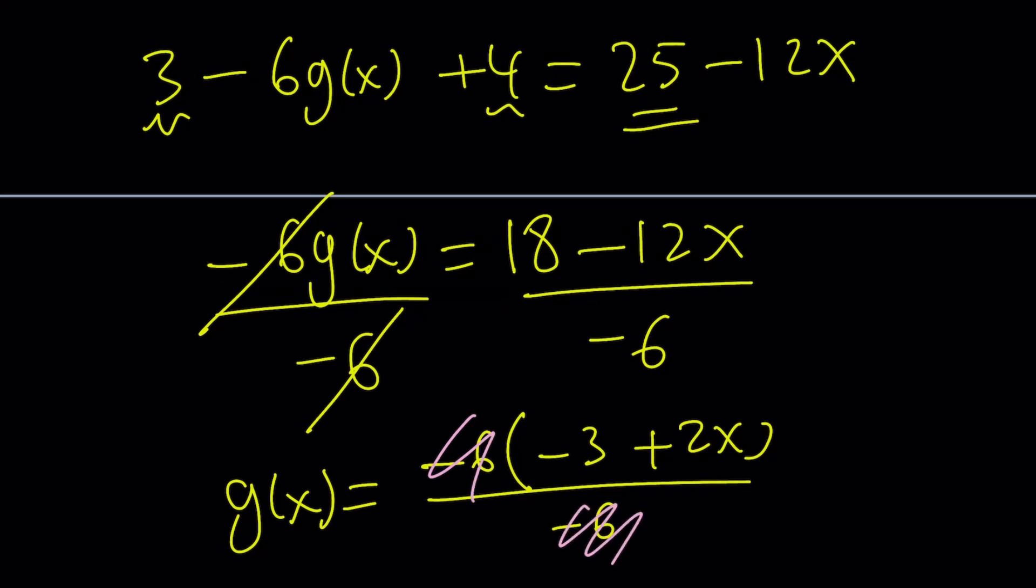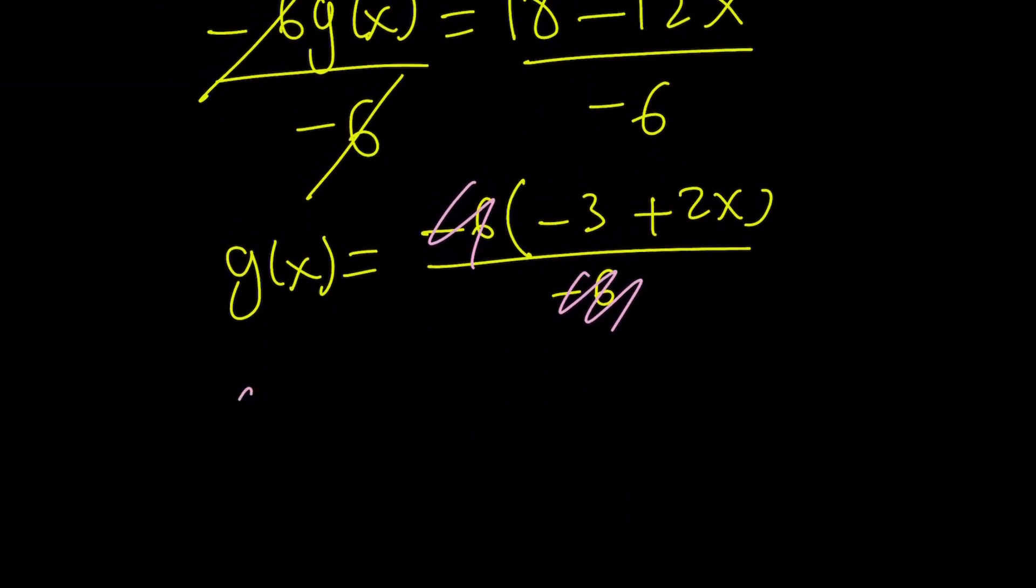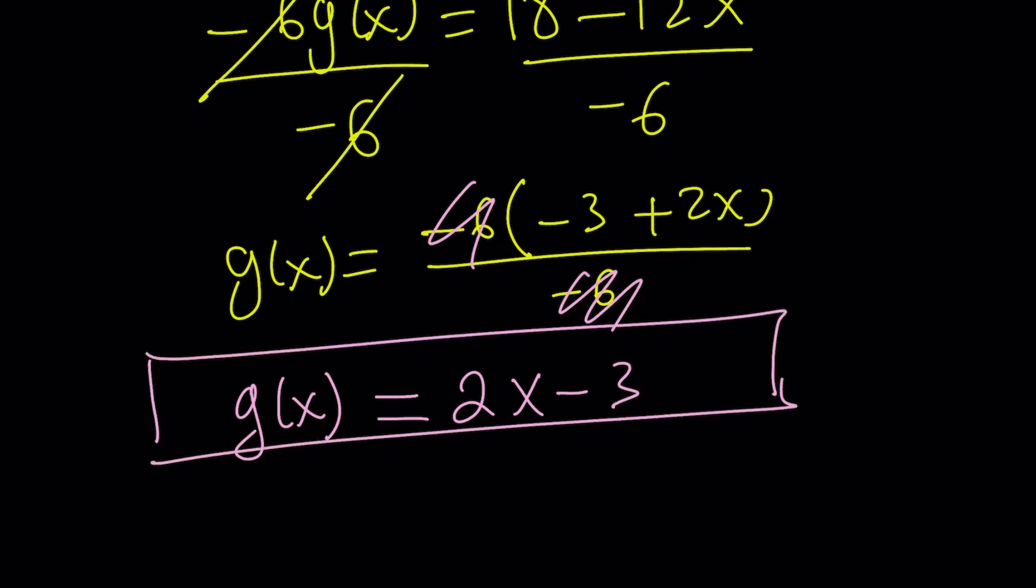And we're going to end up with g of x. But let's go ahead and write it down as a linear equation in standard form. So g of x is just going to be 2x minus 3 from here. So once we find g of x, we can pretty much find anything.